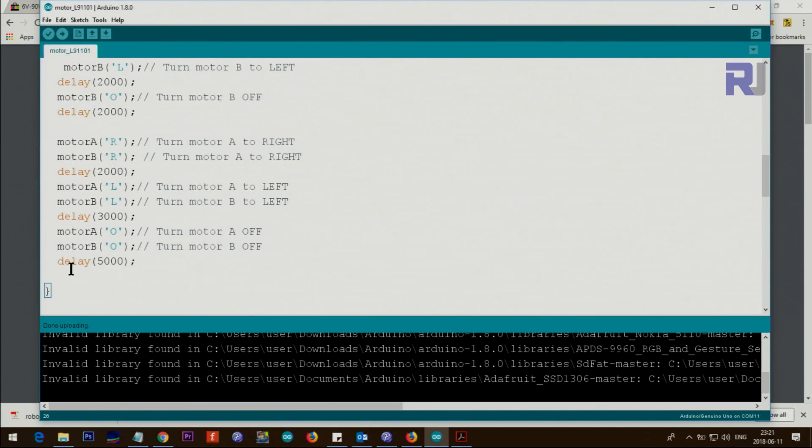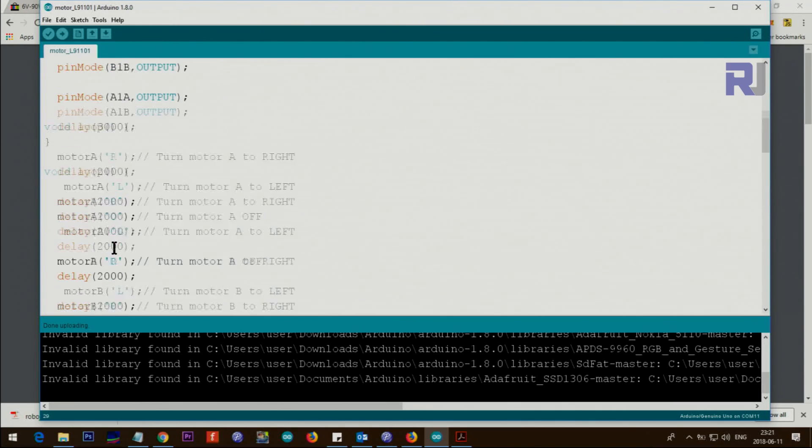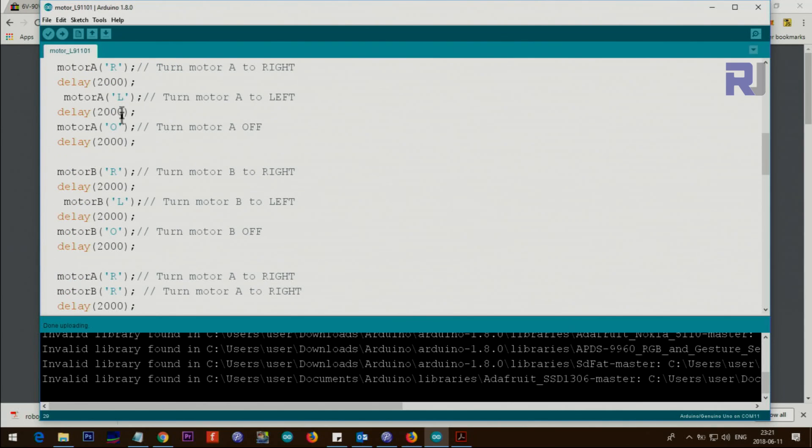There's a delay to give a little time for the system to start, and then the loop starts from here. We have these methods I've created. To understand it, when we want motor A to rotate, we just put the direction R and this is a delay. Then we say motor A left. This L means rotate left. I didn't use clockwise or counterclockwise because that would have been three letters. So just R and L, and O means off.